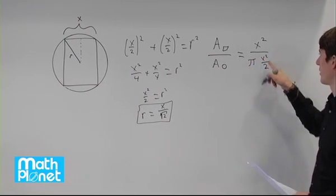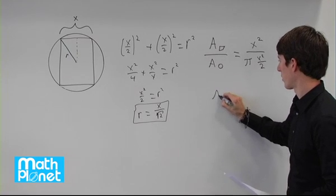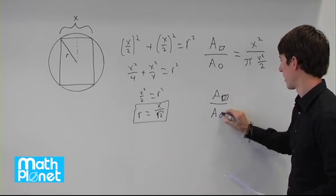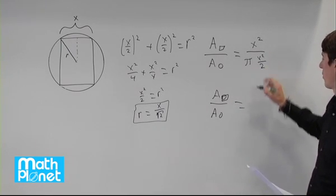Now we have these x squareds getting canceled, so our ratio becomes just 2 over pi.